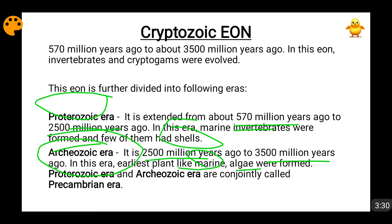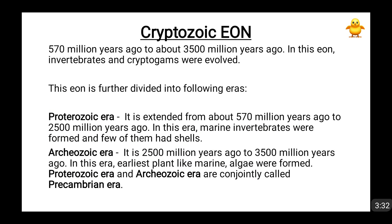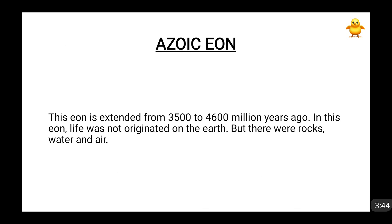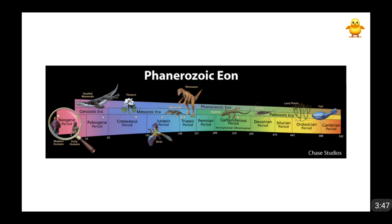If we combine the Proterozoic Era and the Archeozoic Era — the Archeozoic Era is also known as the Archean Era — both of them combined form the Pre-Cambrian Era. Now the most important Eon coming in front of us is the Phanerozoic Eon. We will look at the classification of the Phanerozoic Eon into eras.